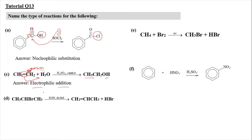For part D, starting with CH₃CHBrCH₃, the CH₃ becomes CH₂ and the Br is gone. So Br is being removed — hydrogen and Br are removed, producing HBr. This reaction is an elimination reaction, where H atom and Br atom are removed, and this is known as the elimination process.